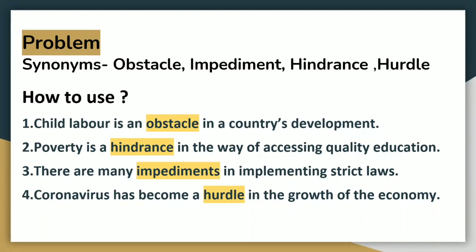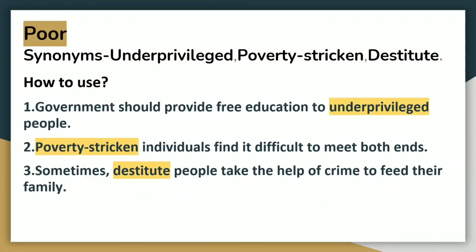Now let's talk about the next word, which is POOR. POOR is not at all an impressive word, and it is not a formal word. So what other words can we use by replacing POOR? Underprivileged, poverty-stricken and destitute. These words may sound difficult but the usage is quite simple. Government should provide free education to underprivileged people. Poverty-stricken individuals find it difficult to make ends meet. Sometimes destitute people take the help of crime to feed their family.